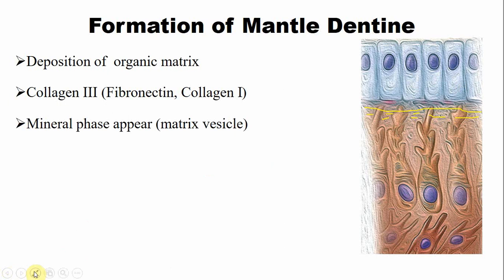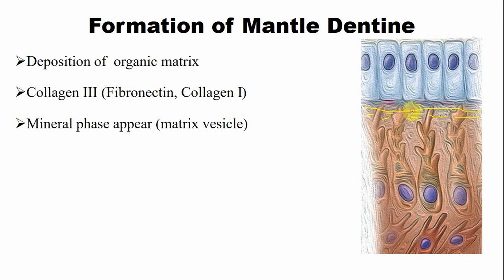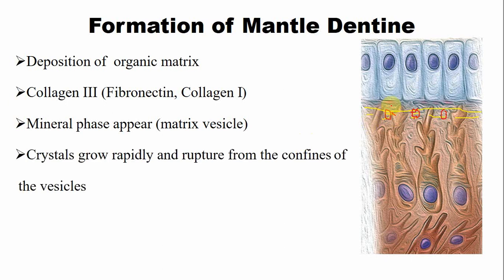After the organic matrix deposition, there is appearance of the mineral phase. Matrix vesicles appear and bud off from the odontoblast process; these matrix vesicles grow and later rupture, and the mineral is then captured by the organic matrix. The same mineralization process occurs in the primary and secondary dentine as well — the crystals grow and rupture from the confines of the vesicles, and those minerals are captured by the collagen fibers.